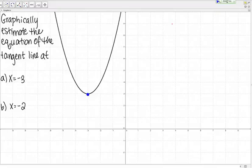Part A is actually a pretty simple example to start with because I'm at the minimum of the curve. Any time I'm at the minimum or the maximum of a curve, my tangent line is just going to be a horizontal line.